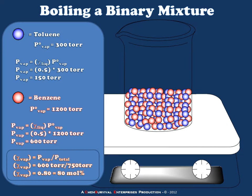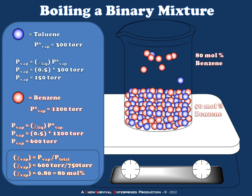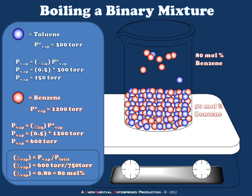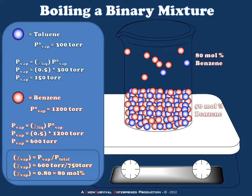Recall from our previous discussion that if we have a 50-50 mixture by mole of toluene and benzene and we boil that mixture on a hot plate, we expect the vapor above that boiling mixture to have a composition of 80 mole percent benzene. This is based upon our calculations using Raoult's, Dalton's, and Ideal Gas Laws. The question is: is it possible to get a distillate that's 99 or even 100 percent benzene? The answer is yes, but we have to think carefully about how we build our distillation apparatus.